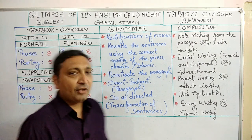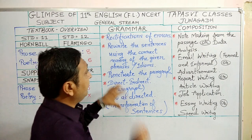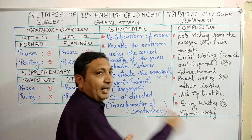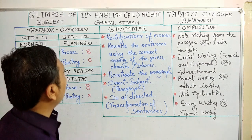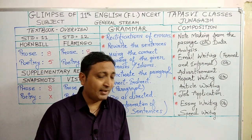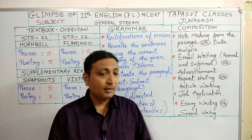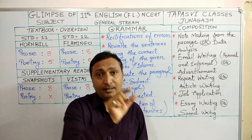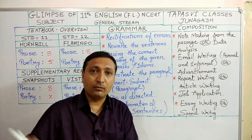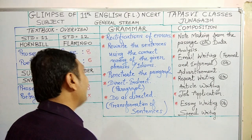First of all, just recall what was there in your 10th and compare with 11th standard as well as your 12th. The first question is rectification of errors. The same kind of question will be asked in 11th as well as in 12th. In rectification of errors, a paragraph is given with separate sentences — you have to find where the error is and make the correction of that word. Around four or five marks of error rectification will be there in your 11th as well as in your 12th.